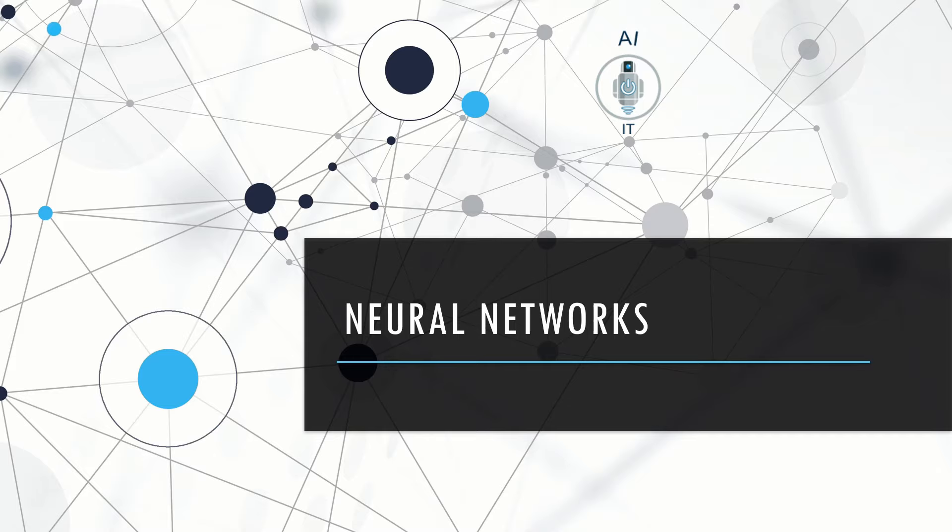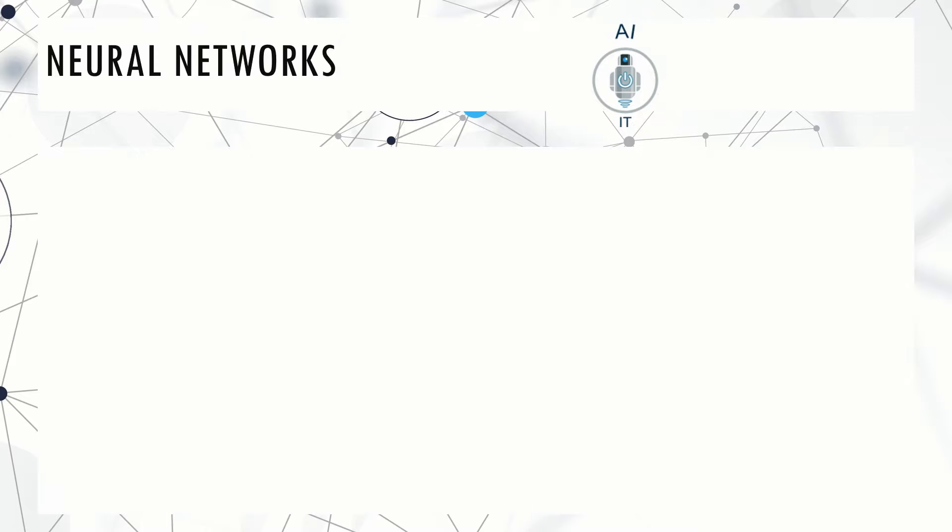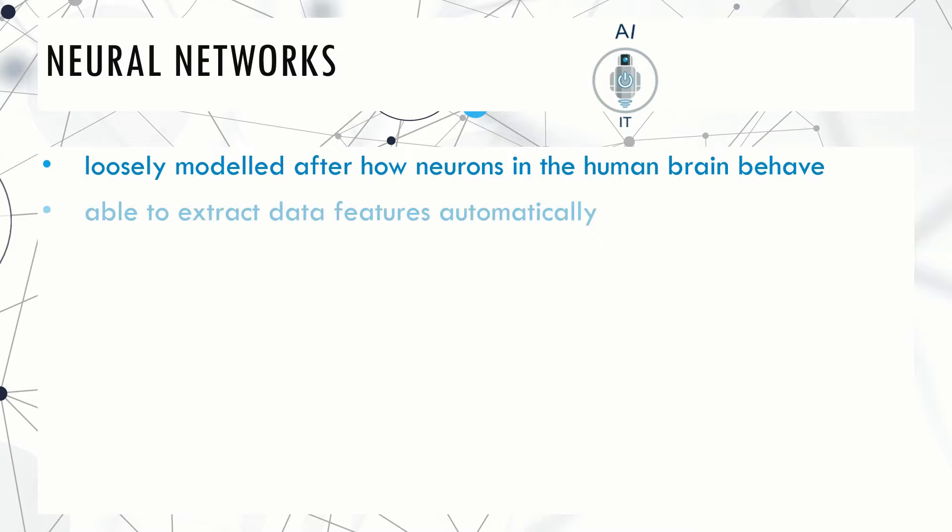We have learned three different terms: artificial intelligence, machine learning, and deep learning. Deep learning is done with the help of neural networks. These neural networks are loosely modeled after how neurons in the brain behave. They are able to extract data features automatically without needing the input of the programmer.